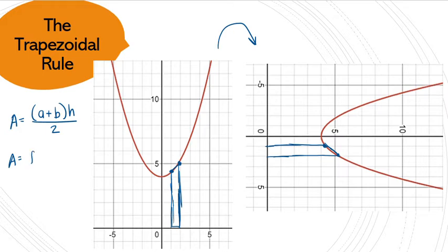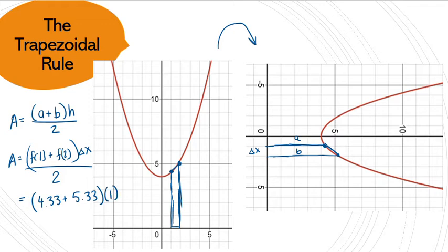So to use our notation, we had f(1) plus f(2) are going to give me a and b, multiplied by the change in x, which I chose to be 1, and divide that by 2. We already knew that f(1) was 4.33. We knew that f(2) was 5.33. Add those together, multiply by 1, divide by 2, and you get 4.83. And you can continue to do this. You can get this area with another trapezoid. That is 5.33 plus 7 times 1 divided by 2. A₁₂ was 4.83, A₂₃ will end up being 6.165.